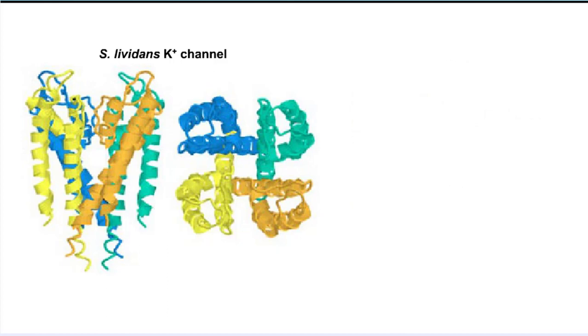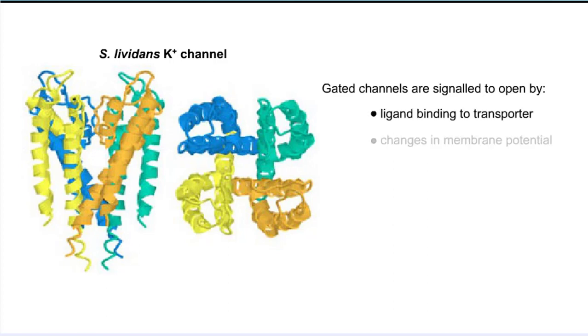Sometimes these channel-like transporters open only when stimulated to do so, and are called gated channels. This signal could be through a ligand binding to the transporter, changes in membrane potential, changes in pH, or covalent modification by a cellular enzyme.